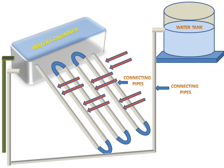When sun rays fall on the pipes, the pipes absorb the heat. This pipe is made of copper, and copper is a heat conducting material, so a larger amount of heat will be conducted by the pipes.